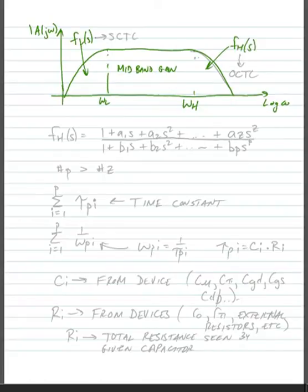And we would find these two shaping factors using, for FL(s), we would use a short-circuit time constant method, or SCTC. We'll look at that in the next lecture, but what we're going to focus on today for the high-frequency is our OCTC analysis, open-circuit time constant.